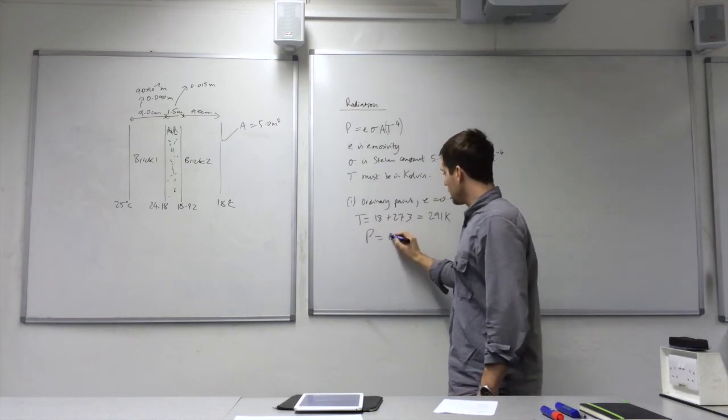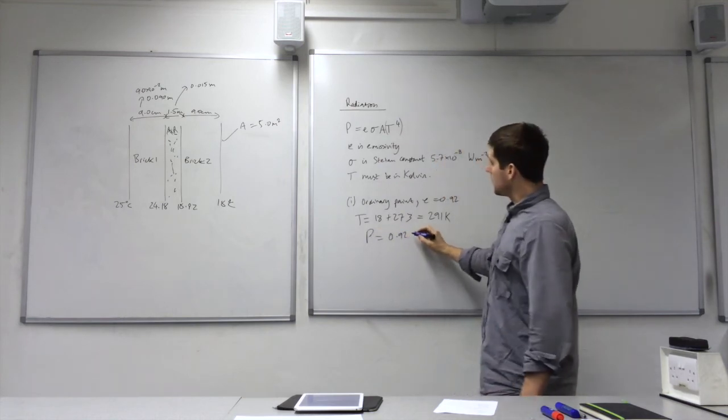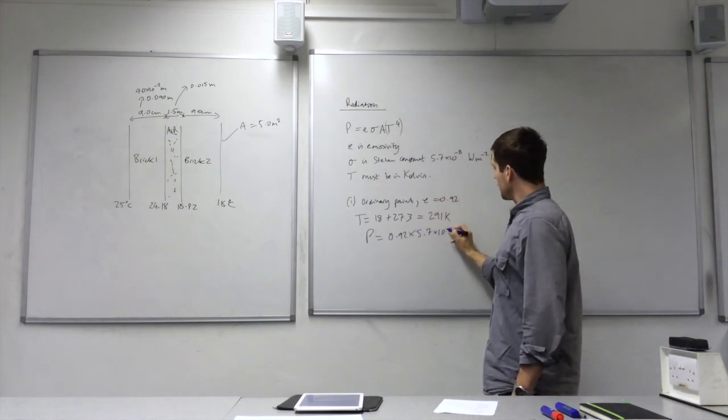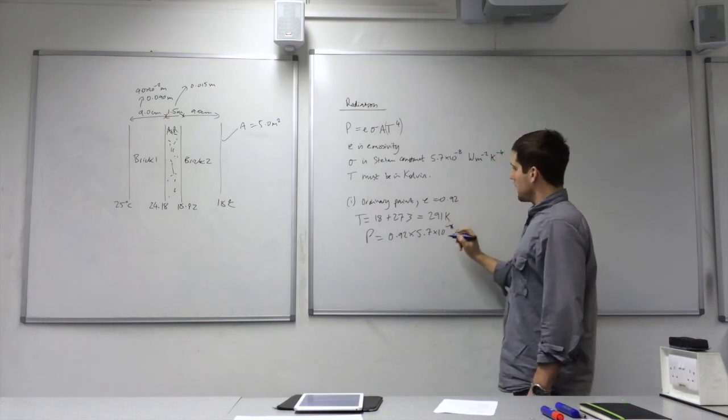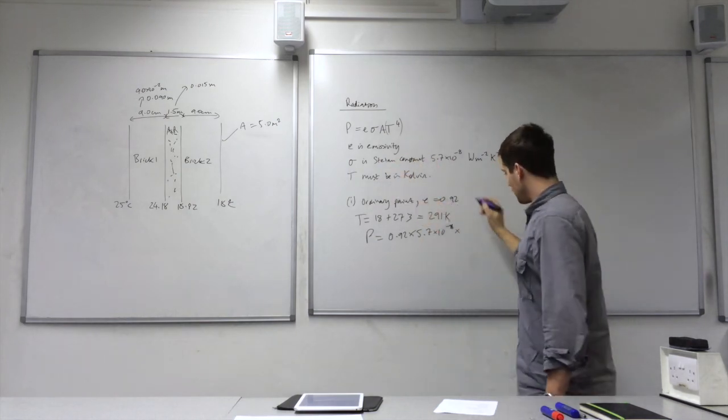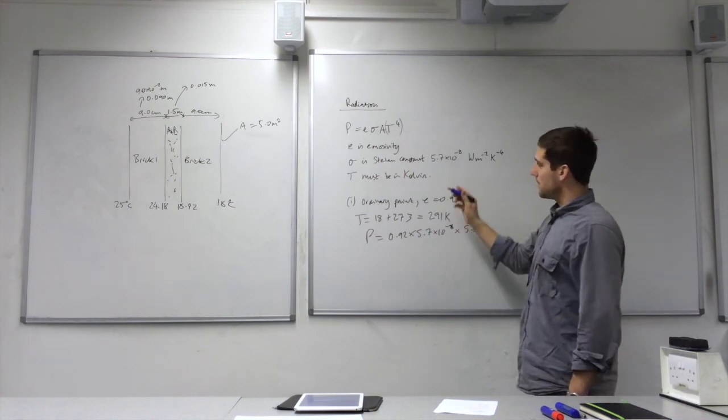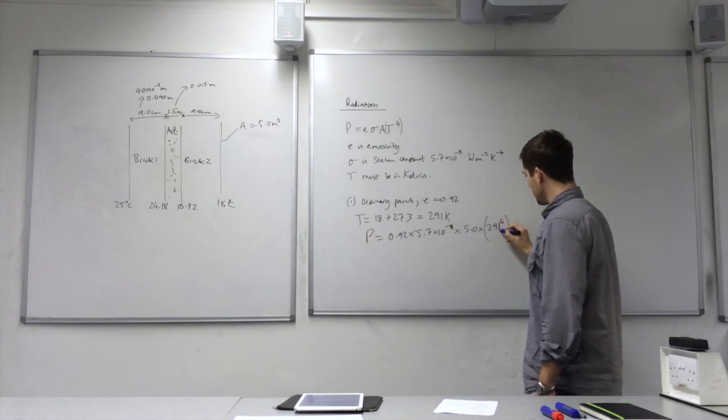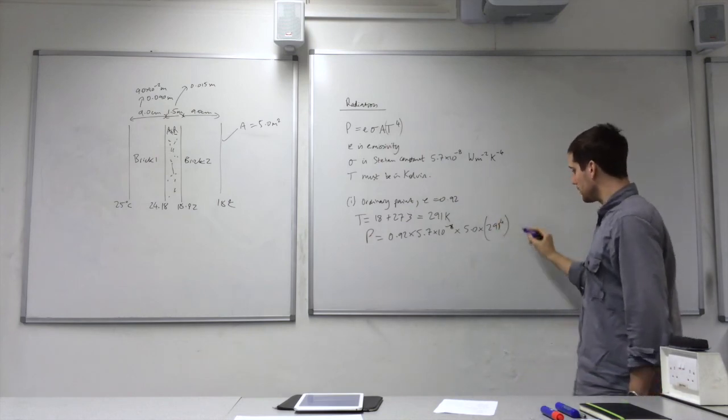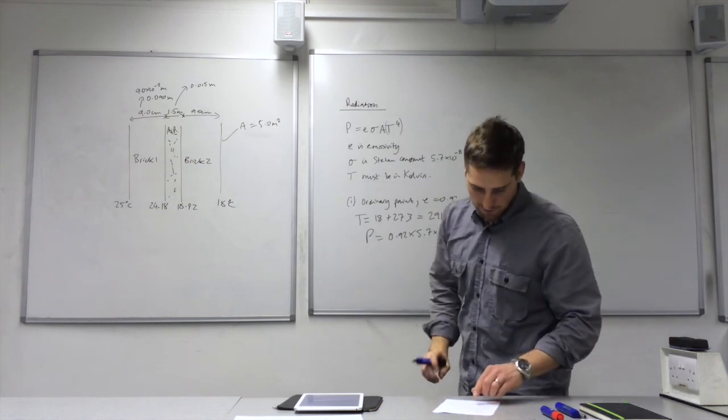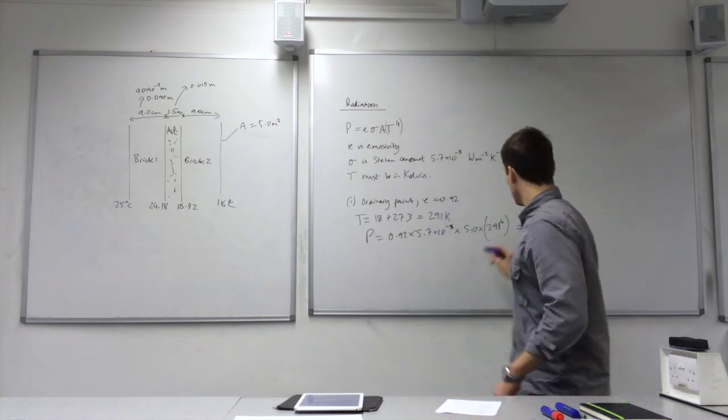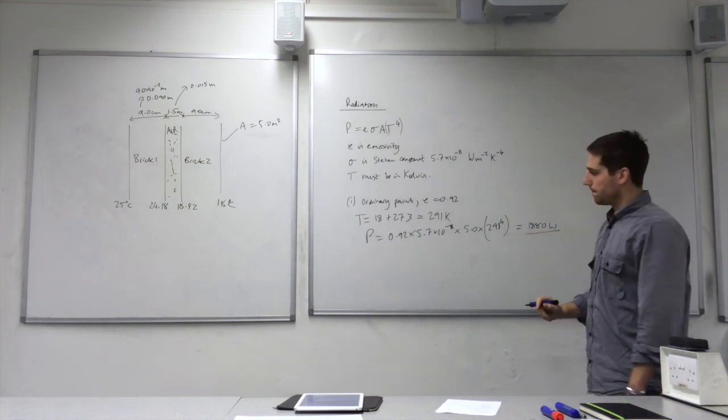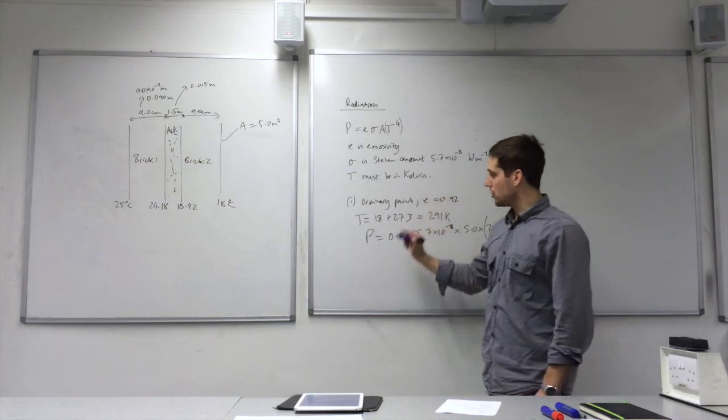Now we can put them in, so it's 0.92, times by this value here, 5.7 times 10 to the minus 8, and multiplied by the area, 5 square meters, multiplied by the temperature, 291 to the power of 4. So I'm just pinning down brackets, so you can see I'm raising that to the power of 4. Once you put that into your calculator, you can put it up as 1,880 watts, if you round it up. That's the rate of heat transfer for ordinary paint.